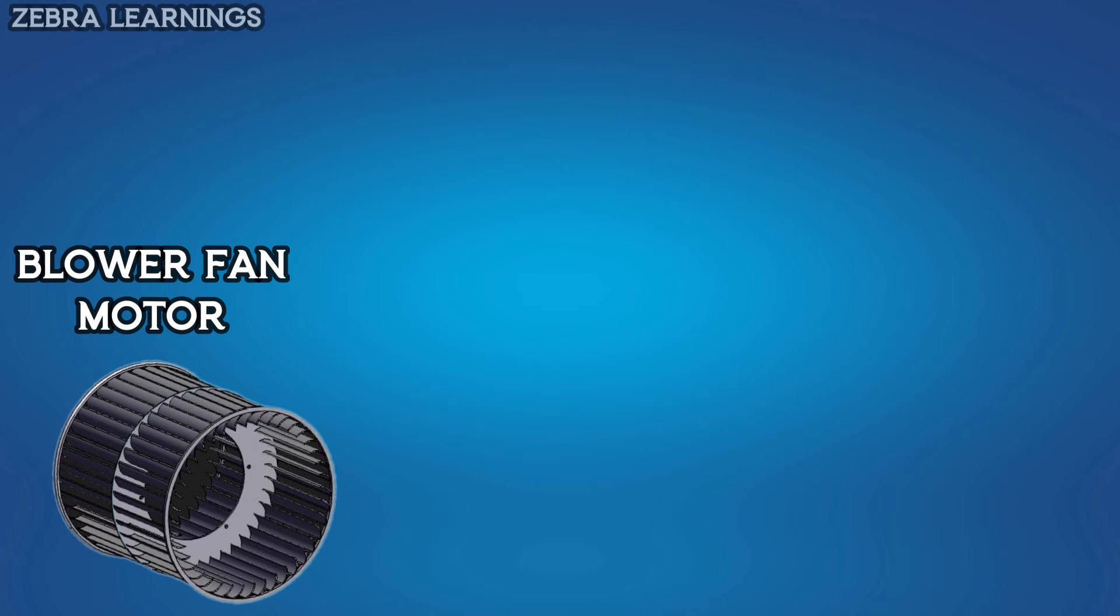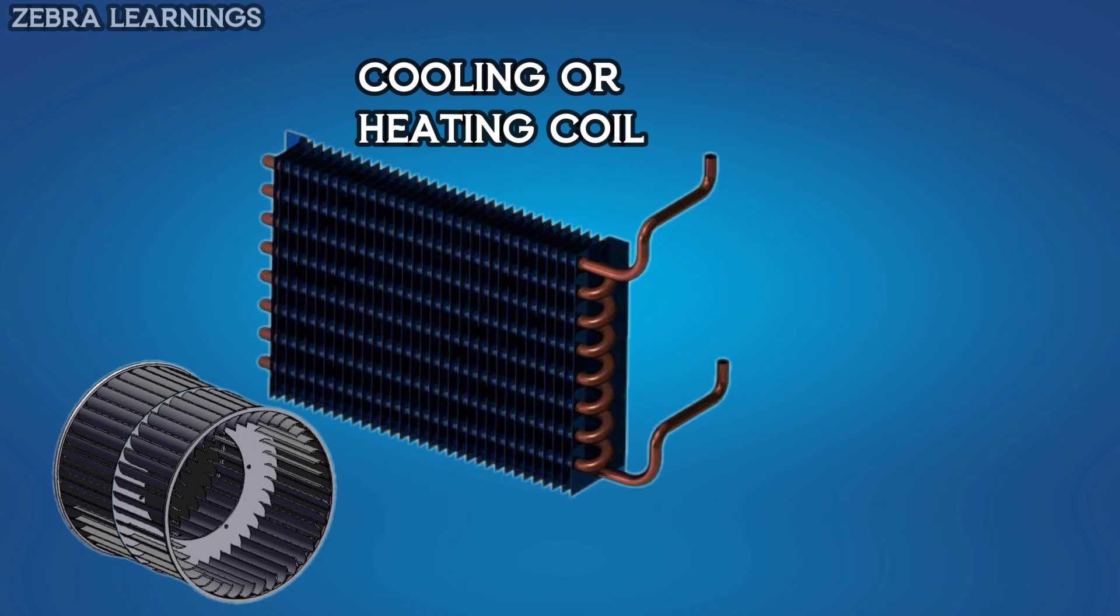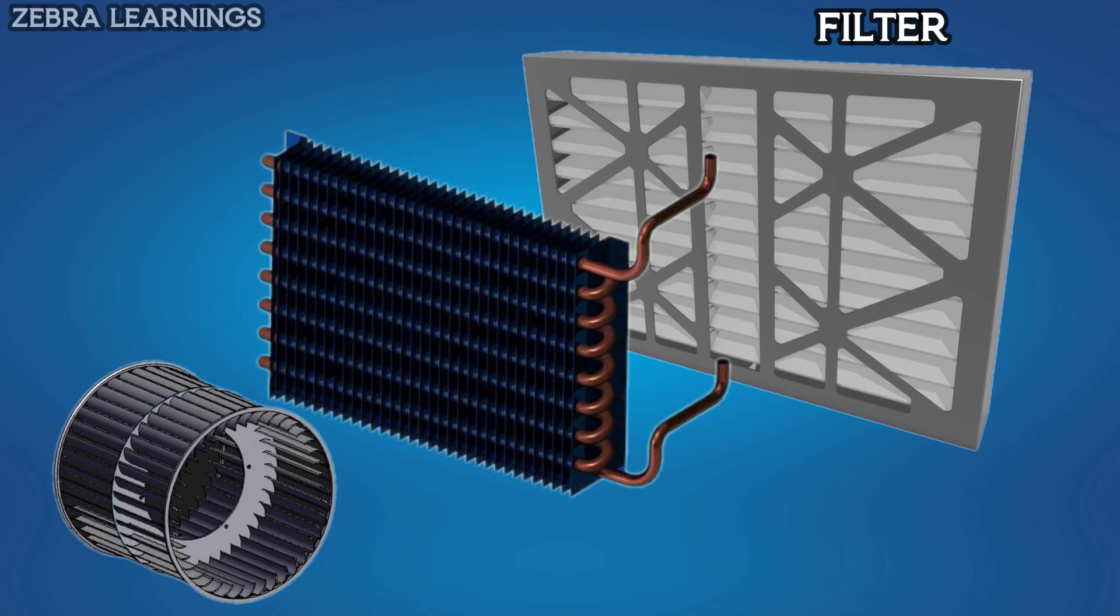The FCU has a blower fan motor. Behind the blower, there is a cooling or heating coil and behind that, there is a filter. That's all the equipment of FCU.